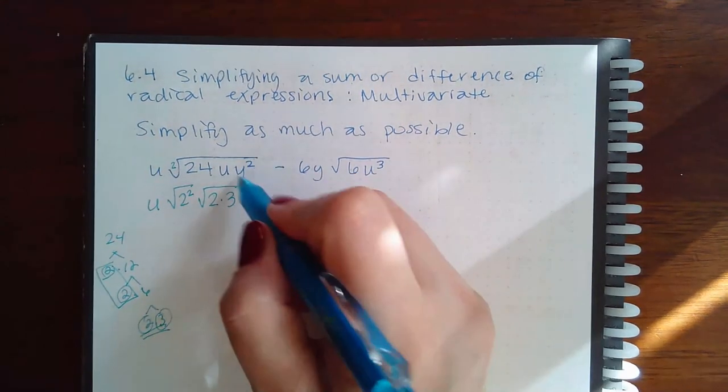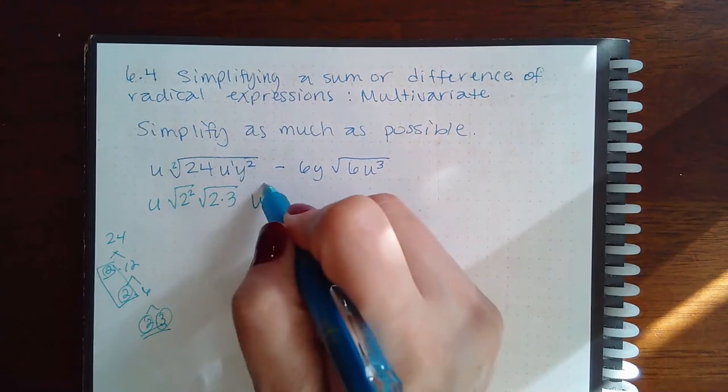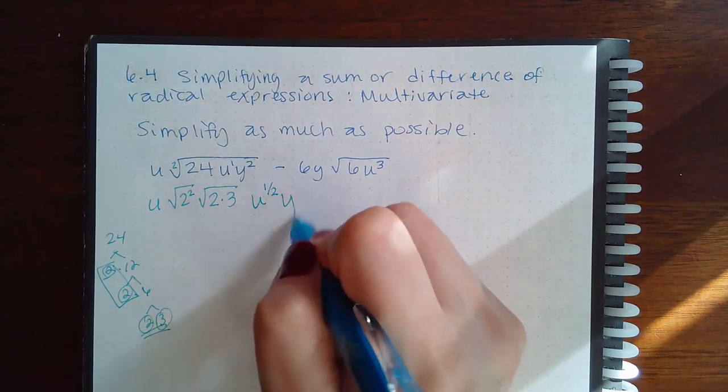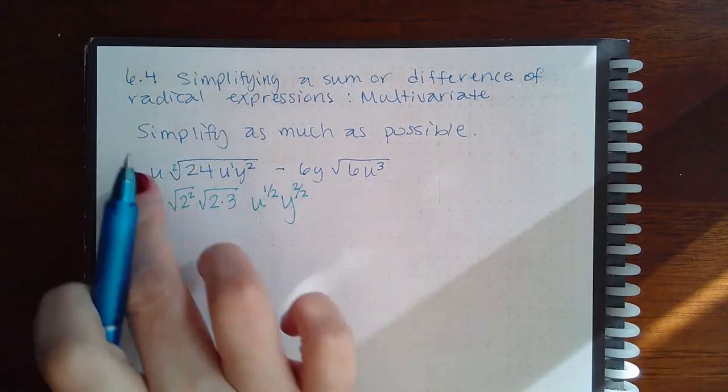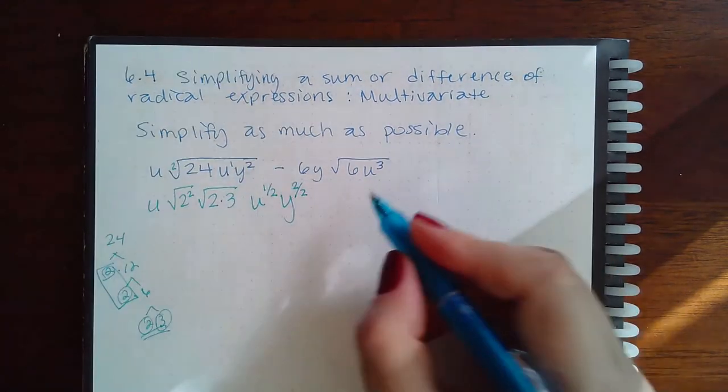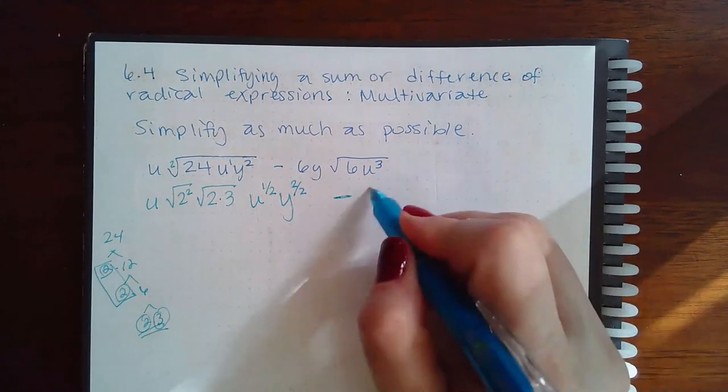Then I'm going to have u to the 1 over 2 and y to the 2 over 2. So all of this is just for this first square root, then I'm going to hit the minus symbol.